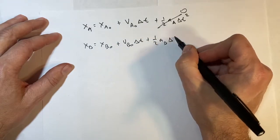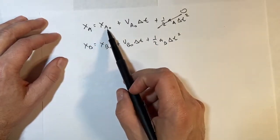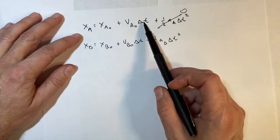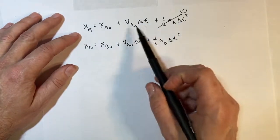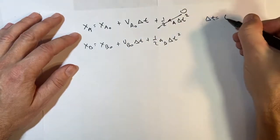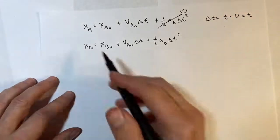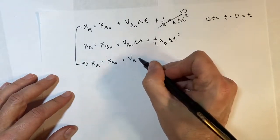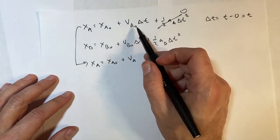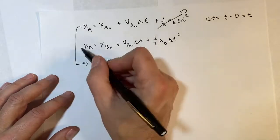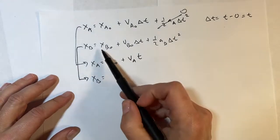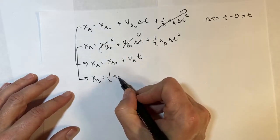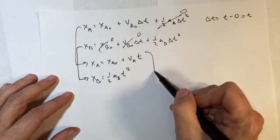To clarify: x_A0 is the position of car A at time zero, and x_A is the position at some later time. Since we start at t equals zero, delta t equals t minus zero, which equals t. So the equation for car A becomes x_A equals x_A0 plus v_A times t. Car B starts at x equals zero, so that term is zero, and v_B0 is zero, leaving x_B equals one-half a_B times t squared.